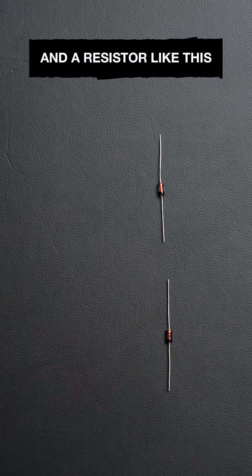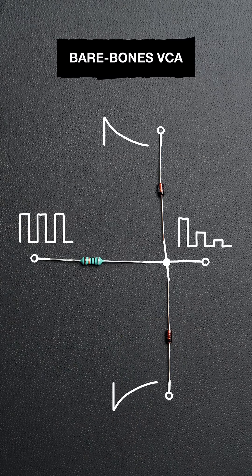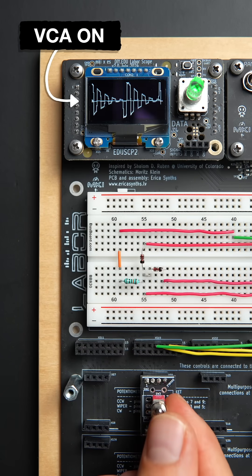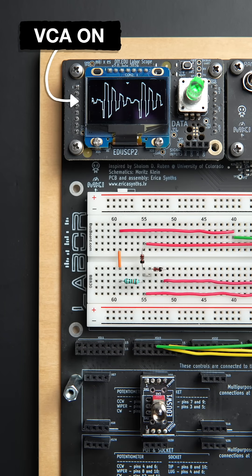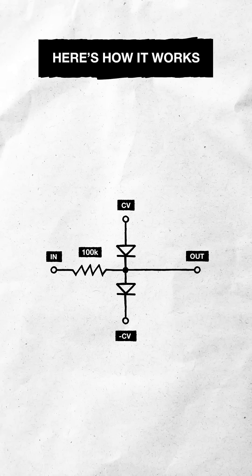Set up two diodes and a resistor like this and you get a bare-bones VCA. Here's how it works.